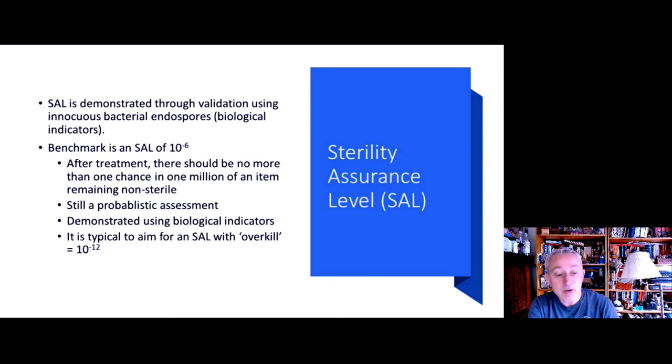So we can demonstrate the sterility assurance level by using spores in a special preparation called biological indicators. And we're expressing the SAL as a negative fraction. That's why it's written as 10 to the power of minus 6, because we're talking about reducing a population downwards rather than increasing. So if we had one microorganism in a bottle of broth and we wanted that microorganism to grow, we'd be moving upwards and we might express that as 10 to the power of 6. But because we're discussing the destruction and elimination of microorganisms, we express this as a negative value. And we're demonstrating that through the use of biological indicators.